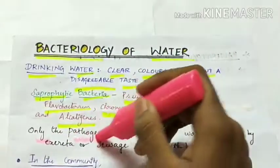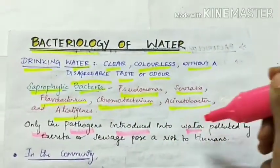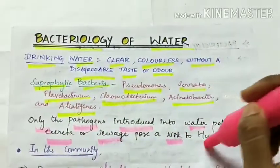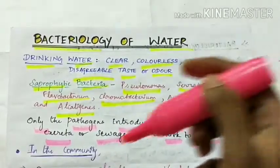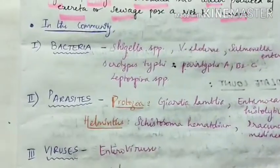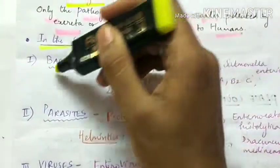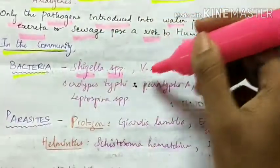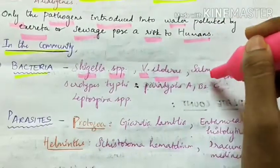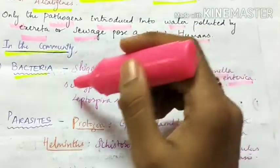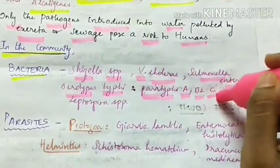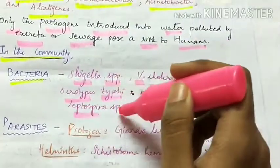Only the pathogens which are introduced into water polluted by excreta or sewage pose a risk to humans. Some of the pathogenic organisms include bacteria such as Shigella species, Vibrio cholerae, Salmonella enterica serotypes Typhi, Paratyphi A, B and C, and Leptospira species.